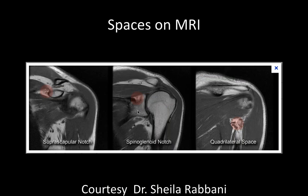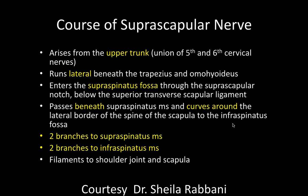The suprascapular notch area is up in this region, superior to the glenoid, and the quadrilateral space is way down here. The suprascapular nerve arises from the upper trunk of the cervical nerves, runs lateral beneath the trapezius, enters the supraspinatus fossa through the suprascapular notch before the transverse scapular ligament, then passes underneath and has two branches to the supraspinatus and two to the infraspinatus muscles.